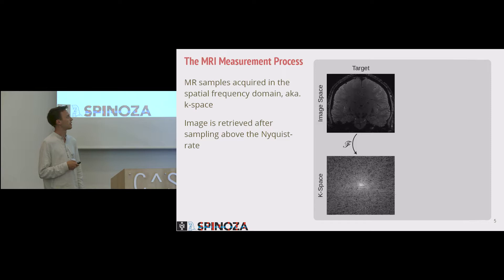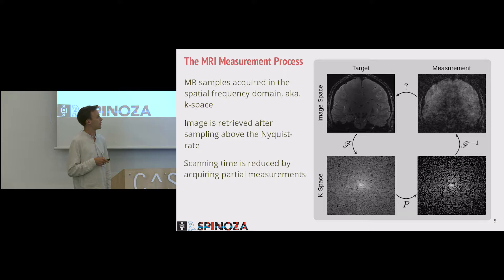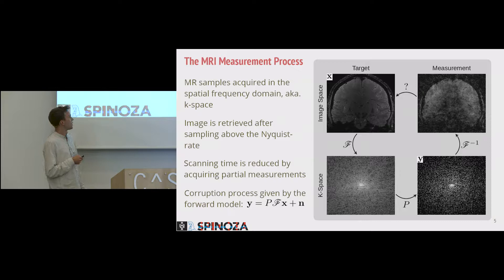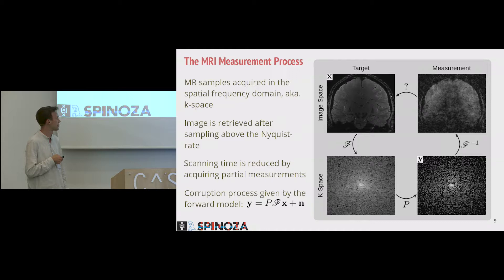In order to speed up the scanning process, what we have to do is sparsely sample below the Nyquist criterion, and using this set of sparse samples, when you apply the inverse Fourier transform, you get this corrupted image instead of the ground truth. So the whole process of going from the ground truth image to the sparsely selected samples — we know this process, it's given by the forward model. Y is the acquired samples and X is the true image. The question is: how do we go back to the original image? That's the problem we're trying to solve.